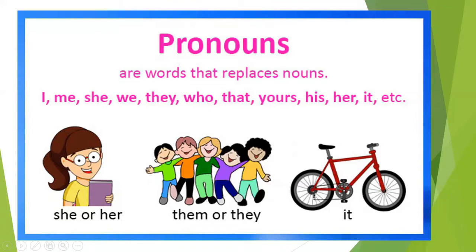For a girl we use 'she' or 'her.' For a boy we use the pronoun 'he' or 'his.' For many people we use 'them' or 'they.' For a bicycle, cat, or dog we use 'it.' Pronouns are those words which are used in place of a noun.